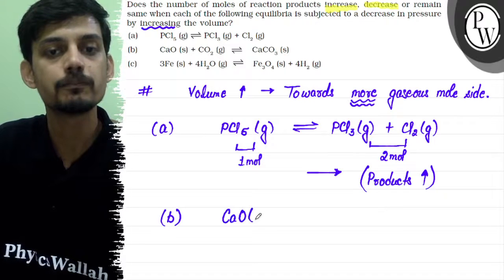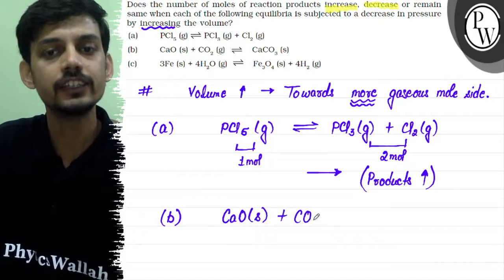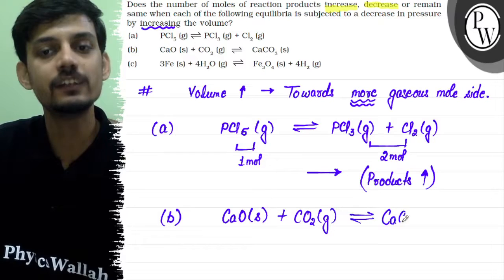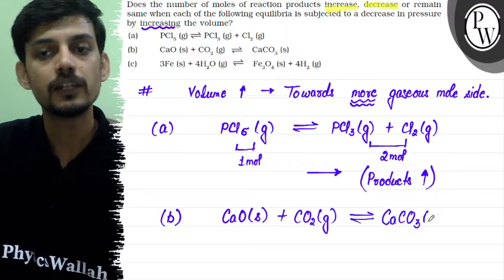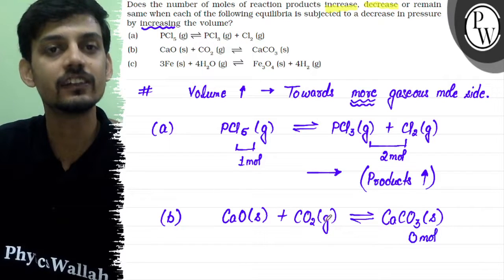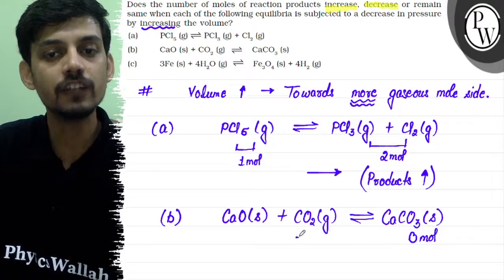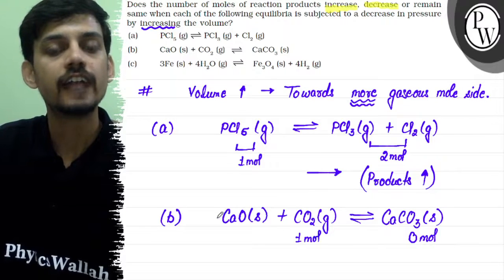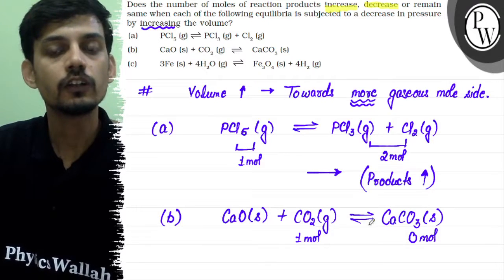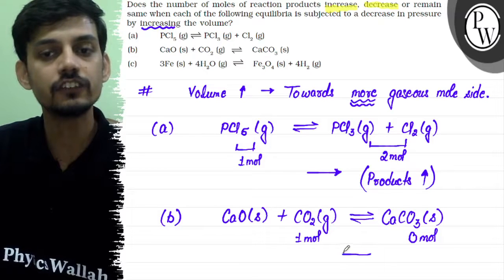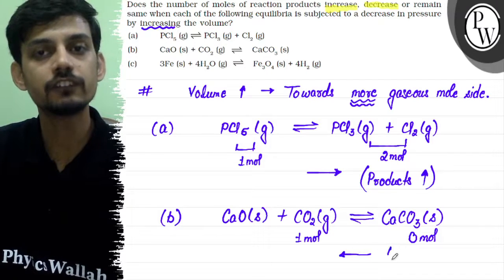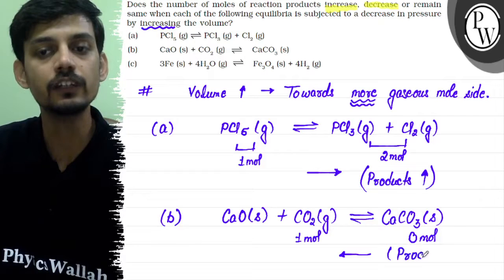Now let's see the second reaction: CaO(s) + CO2(g) reversibly gives CaCO3(s). On the product side, there are 0 moles of gas since CaCO3 is solid. On the reactant side, there is 1 mole of gas — CO2 — since CaO is solid. Volume is increased in all three parts of this question. Since the backward side has more gaseous moles, this reaction will shift towards the backward direction.